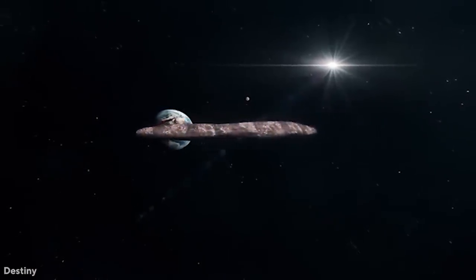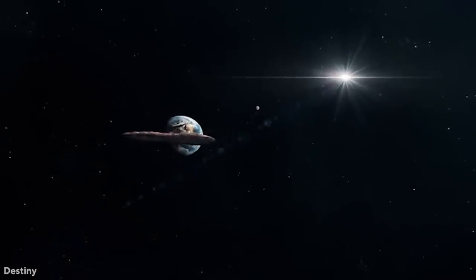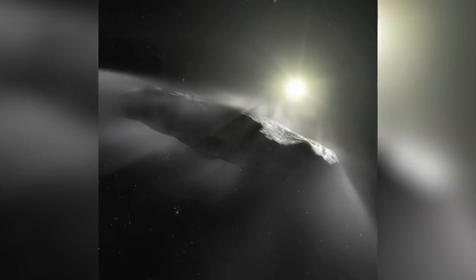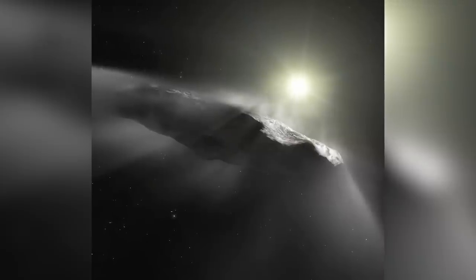Oumuamua's trajectory couldn't be explained solely by the gravitational forces exerted on it by the sun and the planets, as would be the case if it were an asteroid or space rock.